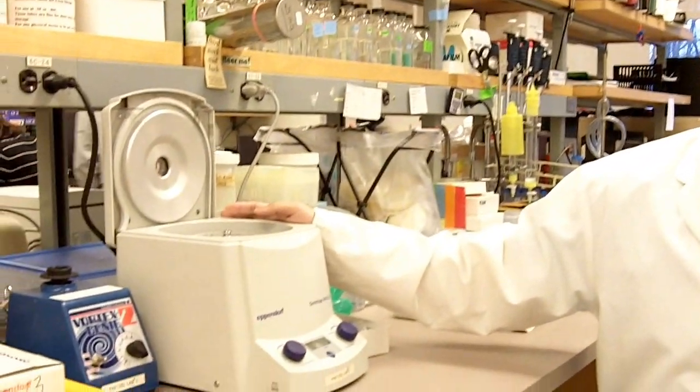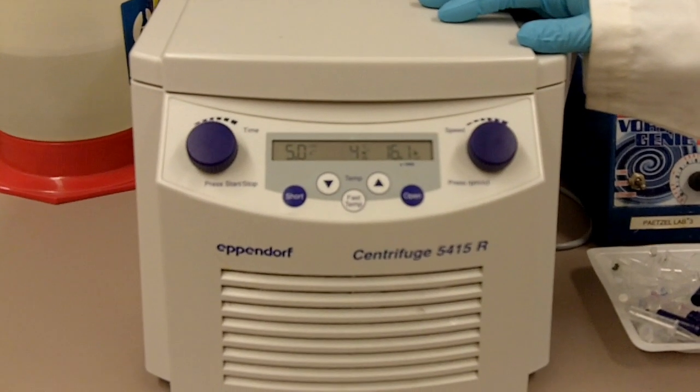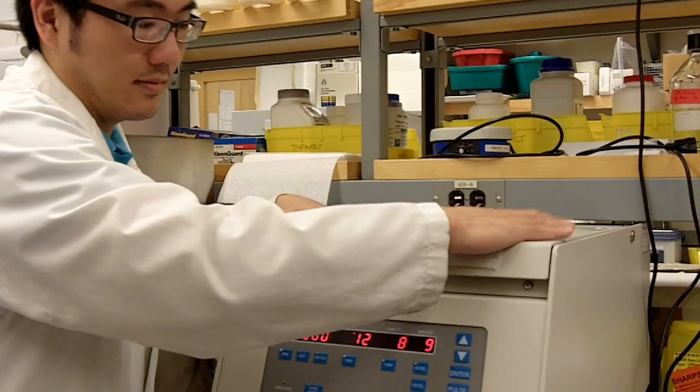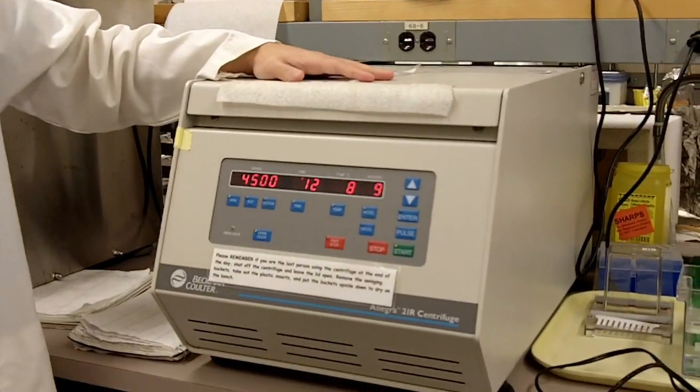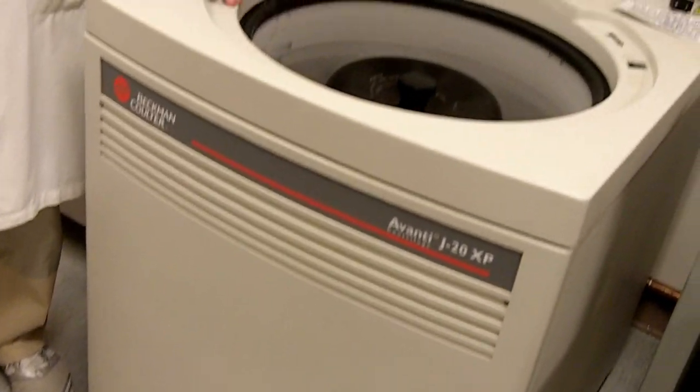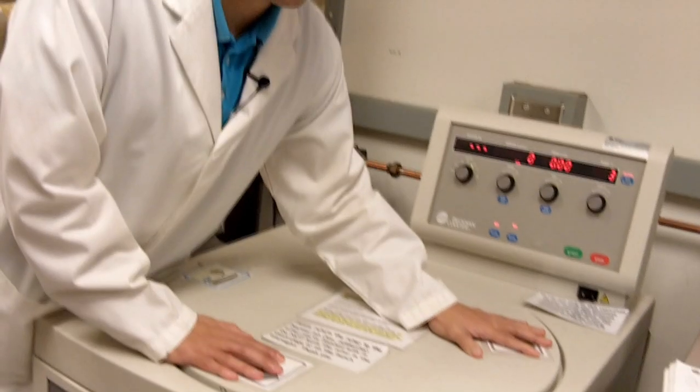This is a standard tabletop centrifuge. Here is a temperature control tabletop centrifuge. So this is a bigger centrifuge for bigger tubes. This is not a washing machine, it's actually a high-speed centrifuge. You don't want to mess with it.